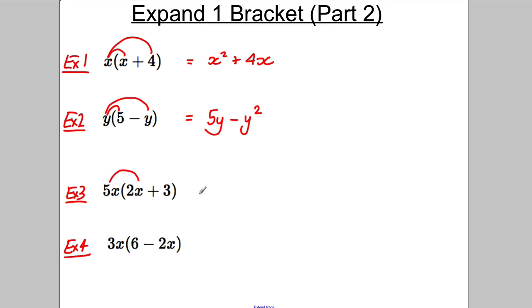5X multiplied by 2X. Well, 5 multiplied by the 2 gives me 10. And X multiplied by X is X squared. 5X multiplied by positive 3 is positive 15X. Just be very careful not to do 5 add 2 there and 7. OK, it's 5 multiplied by 2 is 10. X multiplied by X is X squared. 5 multiplied by the 3 is 15 and we have the X there as well.